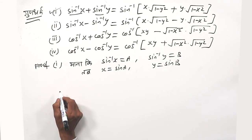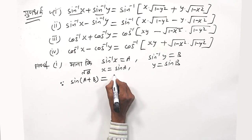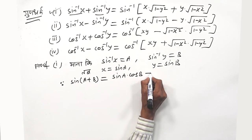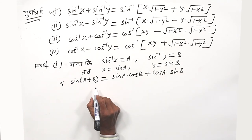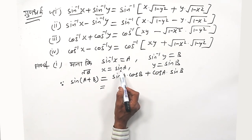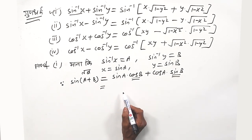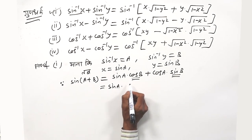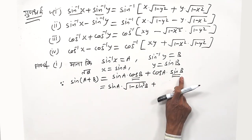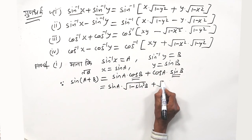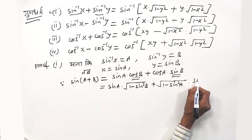Now apply the addition formula for sin: sin(a+b) = sin a · cos b + cos a · sin b. Since x = sin a and y = sin b, write cos b using the identity: cos b = √(1 − sin²b) = √(1 − y²). Similarly, cos a = √(1 − sin²a) = √(1 − x²).